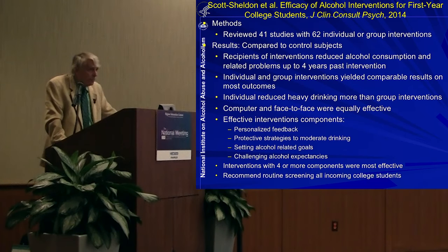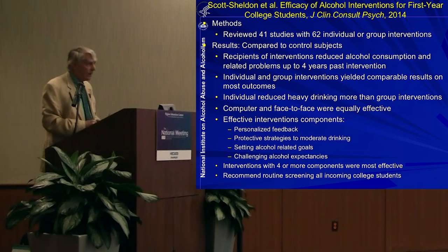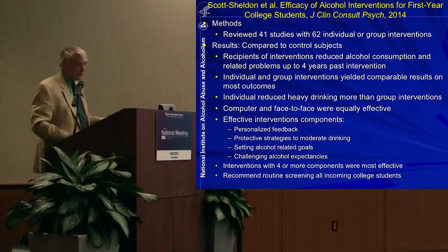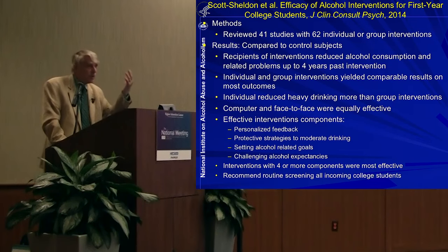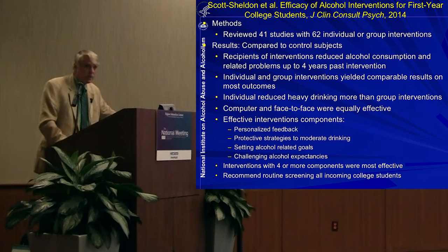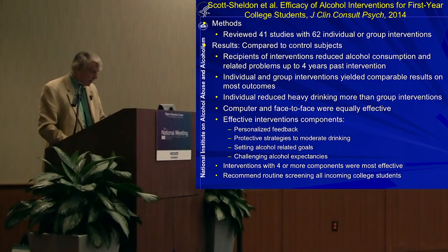Scott Sheldon at Brown University reviewed 41 studies of college students with 62 individual or group interventions and concluded that screening and brief intervention is so effective with college students that they recommend routine screening of all incoming college students in the United States. The average college student has at least one University Health Service visit per year, so if every visit included alcohol screening and counseling, there's potential for population-level reductions.